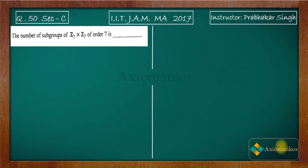Hello dear students, welcome to Axiomatic. This video is part of the solution series for IIT JAM 2017, and we are doing Problem 50 of Section C. It is a problem from abstract algebra. The question asks: what is the number of subgroups of Z7 cross Z7 of order 7?